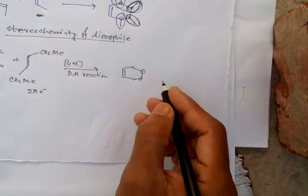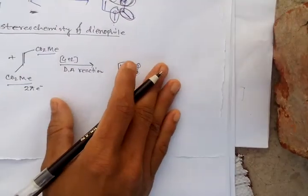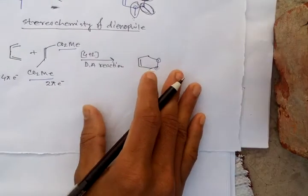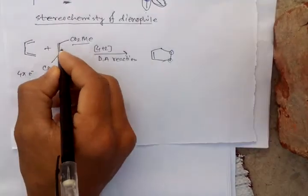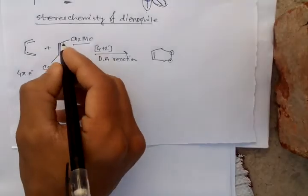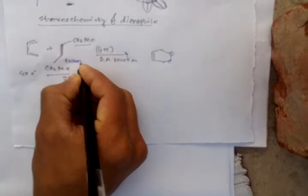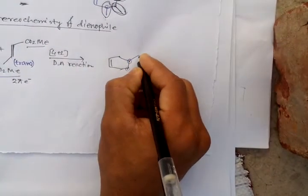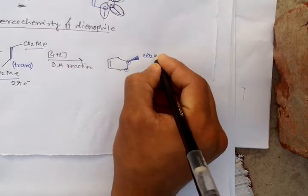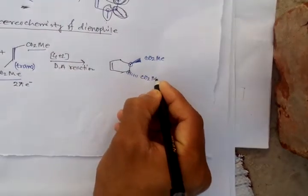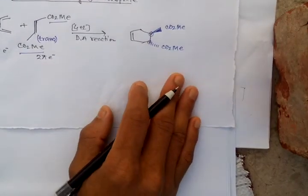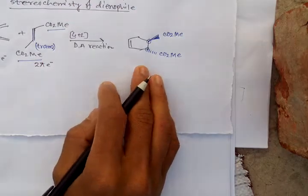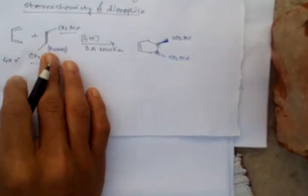Here and here there will be CO₂Me groups. Now what will be the stereochemistry of these CO₂Me groups? The stereochemistry of the dienophile is trans — it is a trans dienophile. So in the product also we get trans. The product selectivity depends on this dienophile. Here this dienophile is trans, so the product we get is also trans.